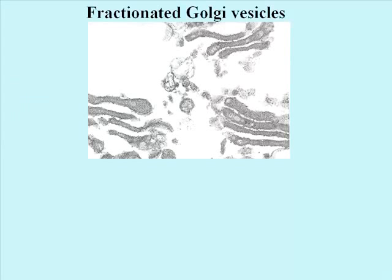When fractionated by differential centrifugation and then viewed by TEM, isolated structures that look remarkably like Golgi vesicles can be seen. That these are Golgi vesicles can be confirmed by first destroying the membranes and releasing the proteins, and then assaying the proteins for specific hydrolytic enzymes, peroxidases, or secretory proteins.